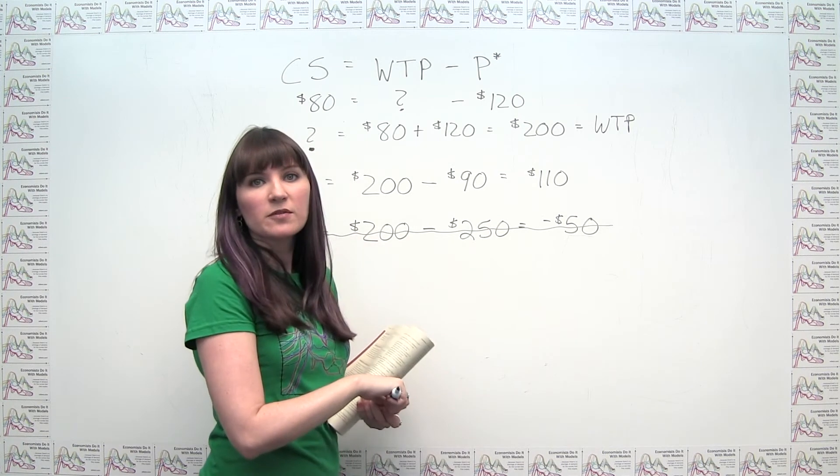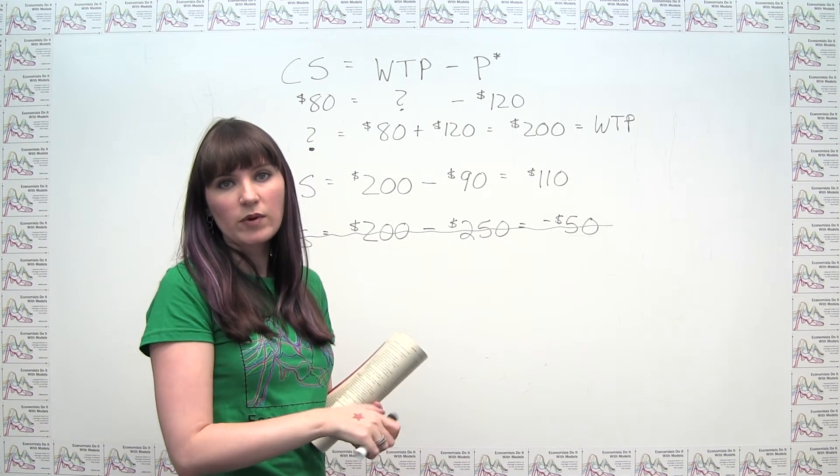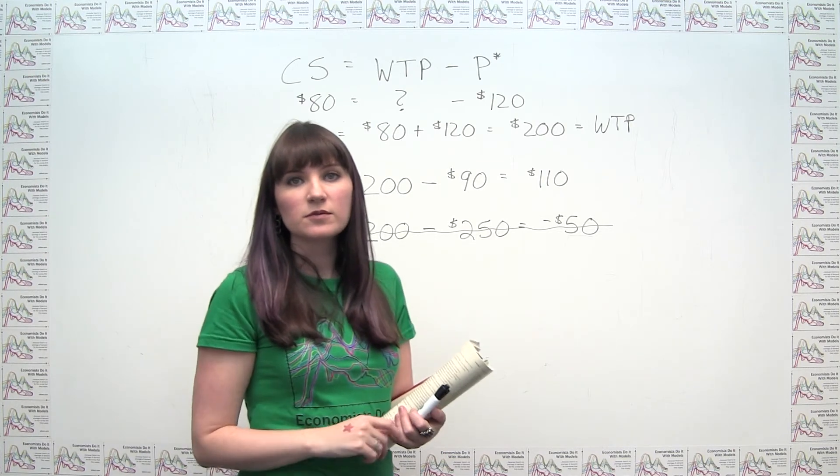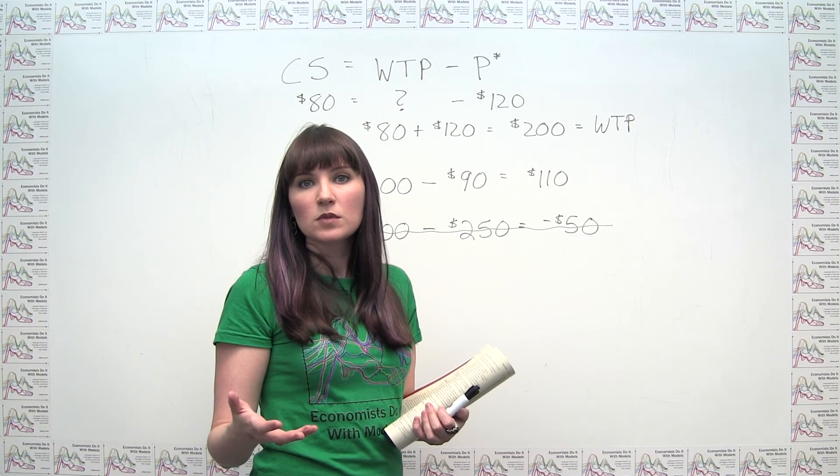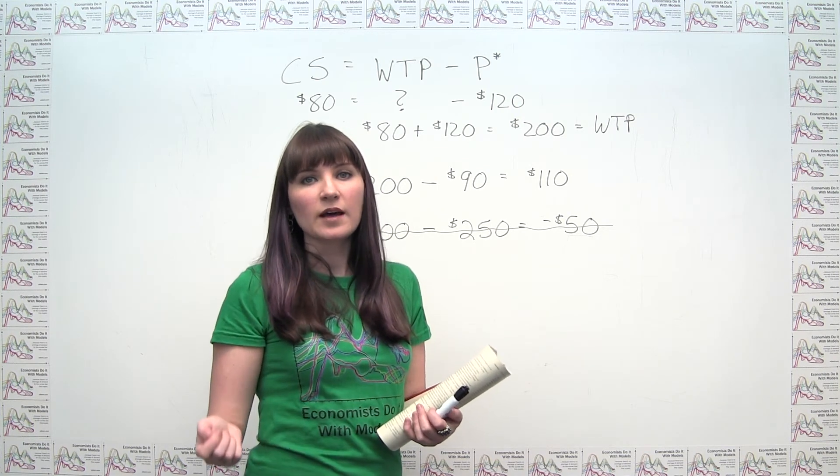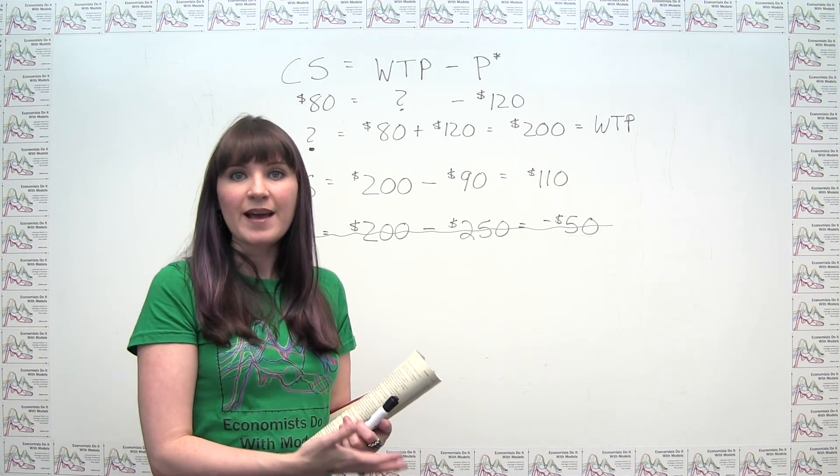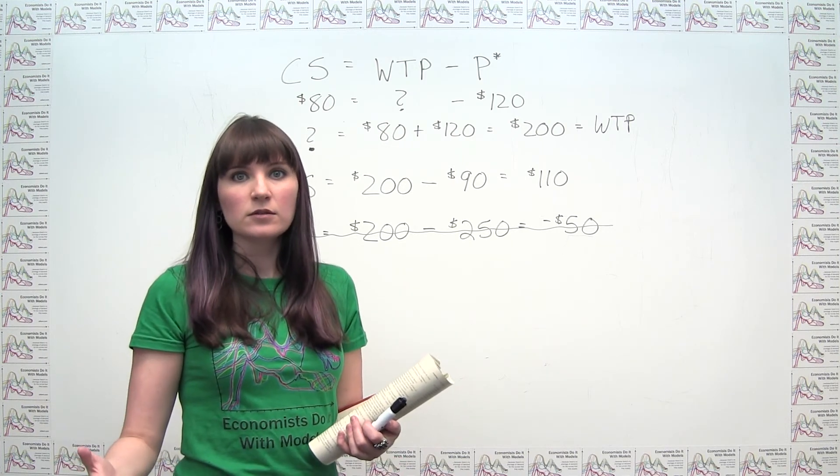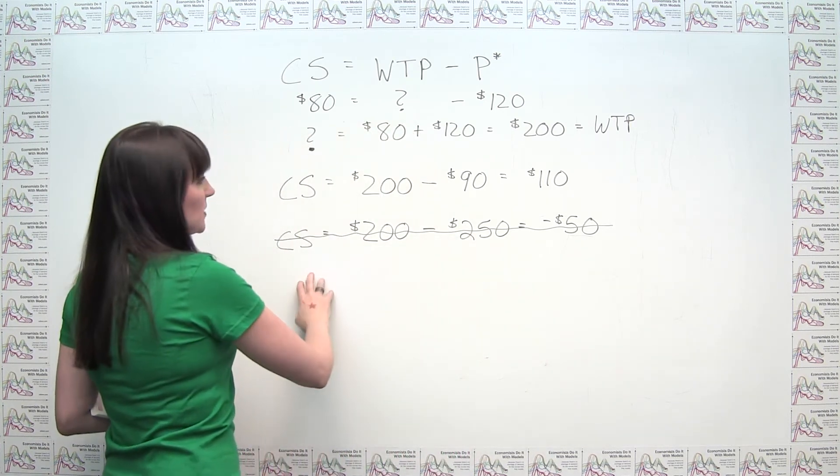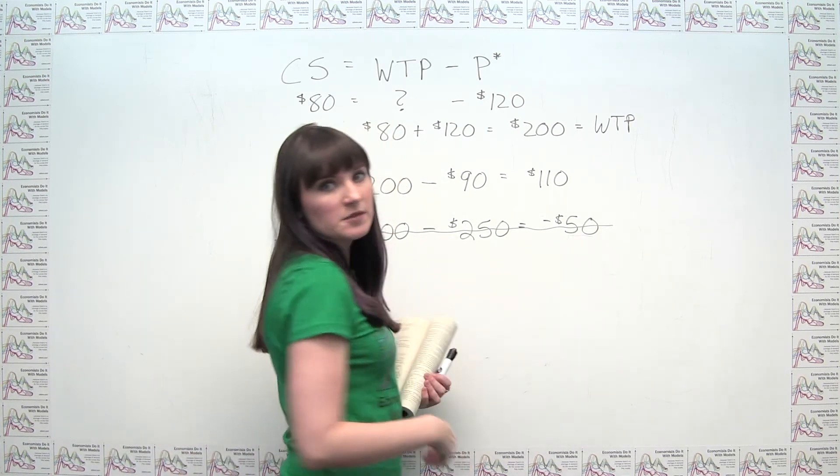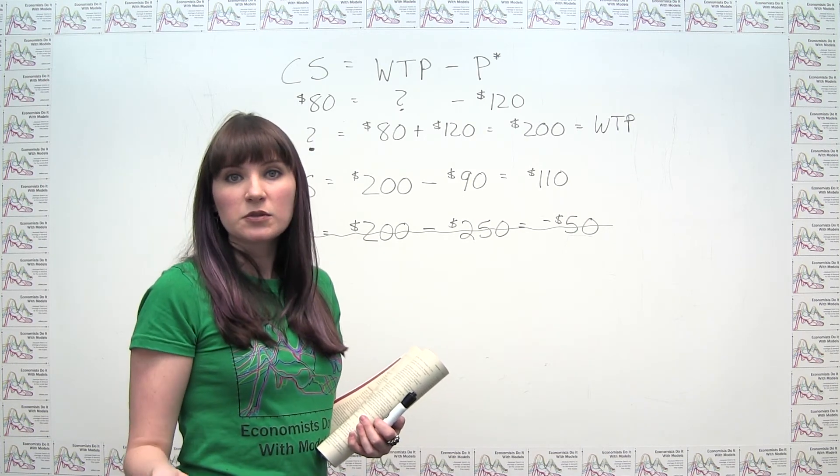So let's think about this. If this consumer valued the item at $200, and the market price of the item were $250, she just wouldn't be purchasing the item. And if she's not purchasing the item, then by definition her surplus from that transaction, since the transaction's not happening, is zero. So be careful here that you can't just apply this same formula and say, oh, we just get a negative surplus, because what actually is happening is the consumer is choosing not to engage in this transaction and getting a surplus of zero instead.